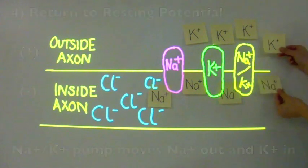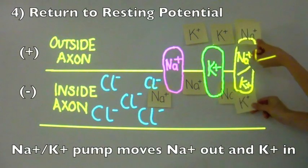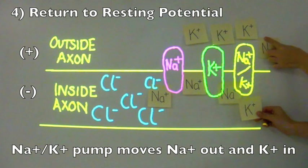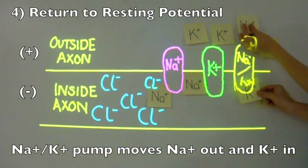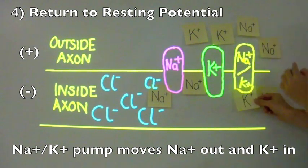The interesting point here is that although you've returned the relative charges to resting potential, you now have sodium ions on the inside and potassium ions on the outside, when at resting potential they were the other way around.